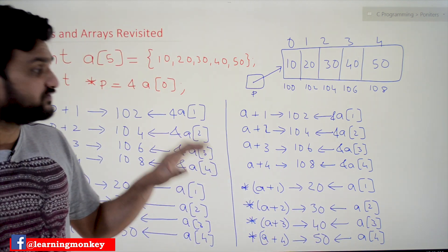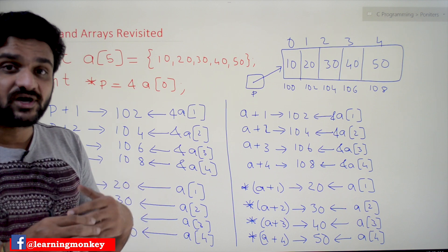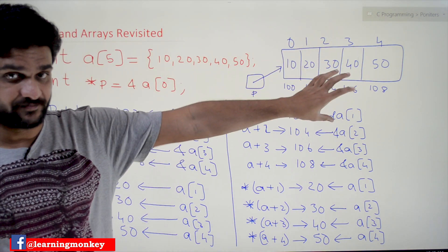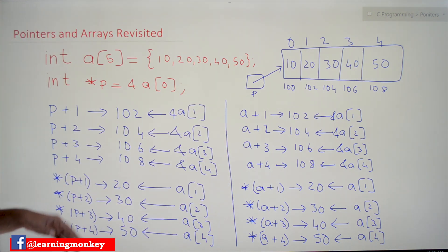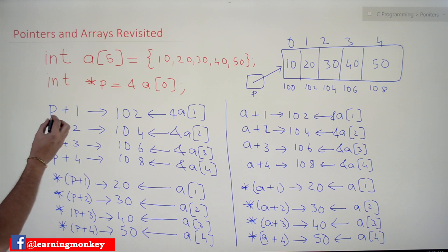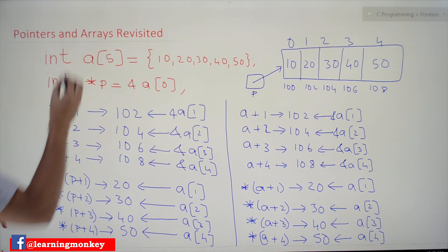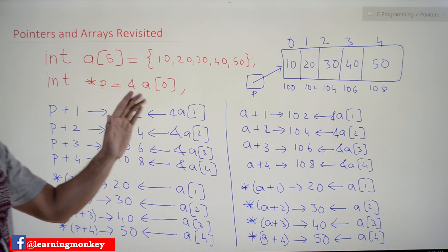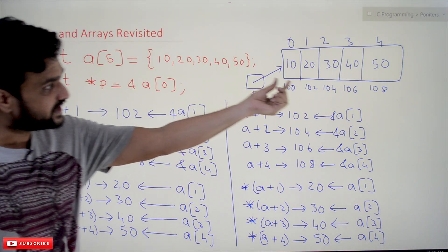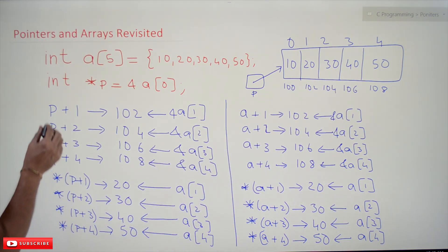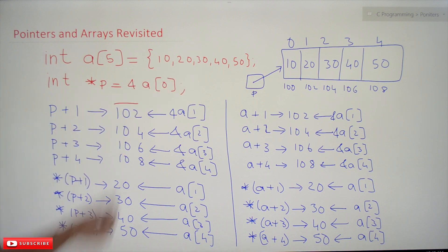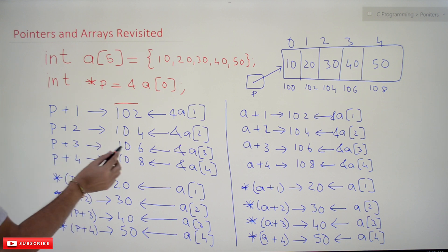What we are trying to understand in this class are the different possibilities C provides to access the elements of an array and the addresses of array elements. One way is using the pointer variable — we can change the address the pointer holds. P+1 means we go to address 102, P+2 means 104, P+3 means 106.